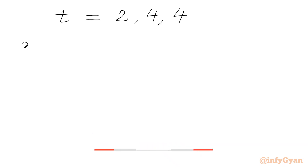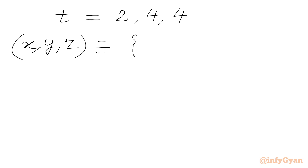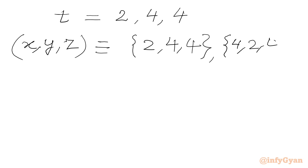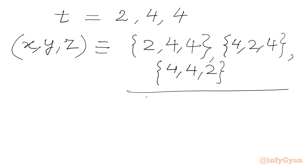Now we can write our answer as ordered triplets. So x comma y comma z gives us 2 comma 4 comma 4, where x is 2, y is 4, z is 4. Then considering permutations, we also have 4 comma 2 comma 4 and 4 comma 4 comma 2. So we get 3 triplets.